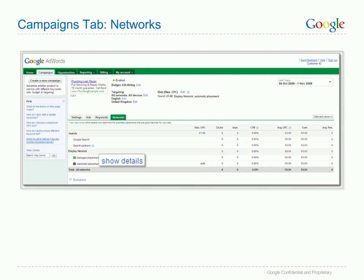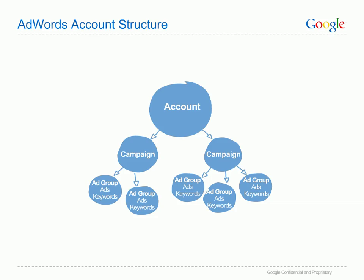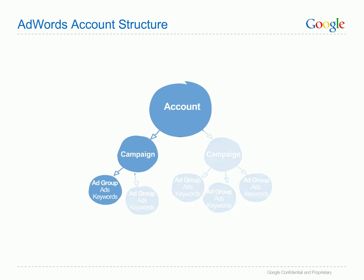Your AdWords account is structured into three levels: Account, Campaign, and Ad Group. AdWords uses this structure to help you create really targeted advertising. Your account is split into campaigns and each campaign into ad groups. Each ad group contains a keyword list and one or more ads. If you only have one ad and one keyword list, your account only has one campaign with one ad group. You can think of campaigns and ad groups like categories and subcategories. Each campaign should have a theme and each ad group should focus on one specific product or goal.